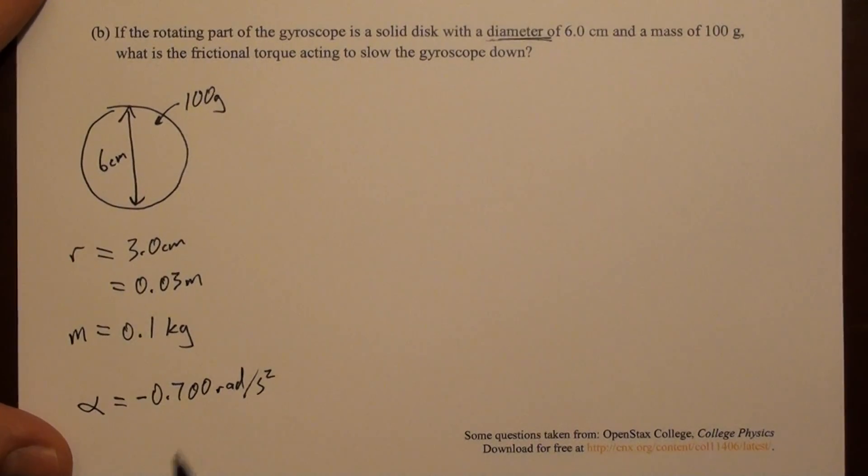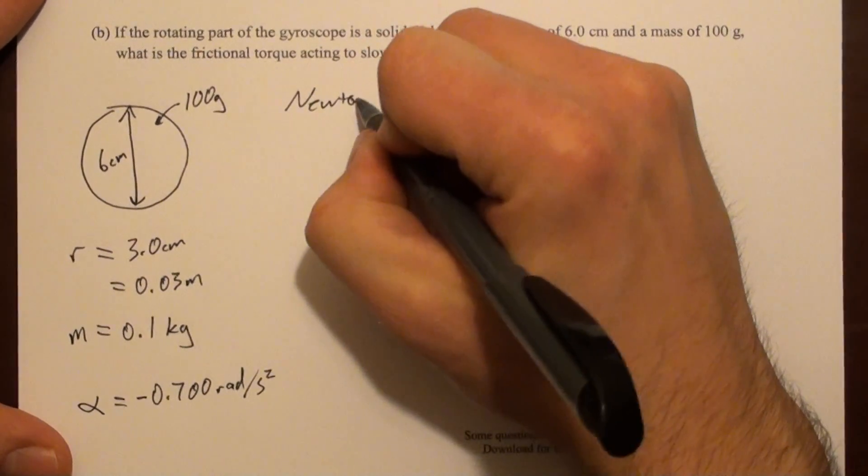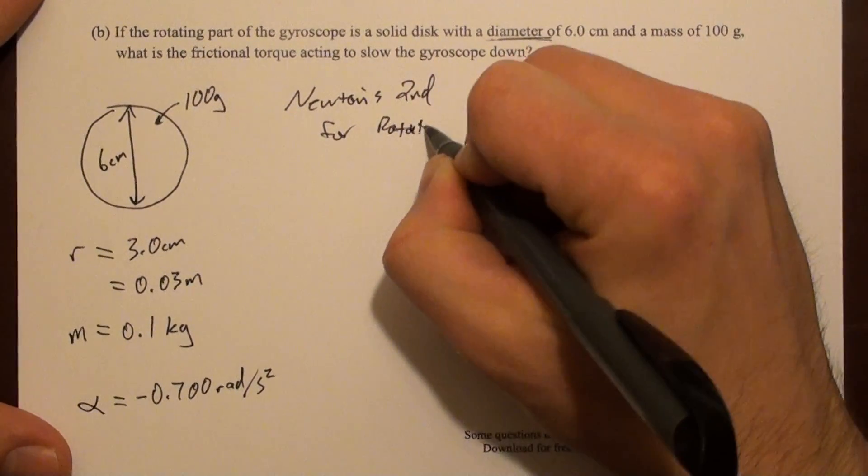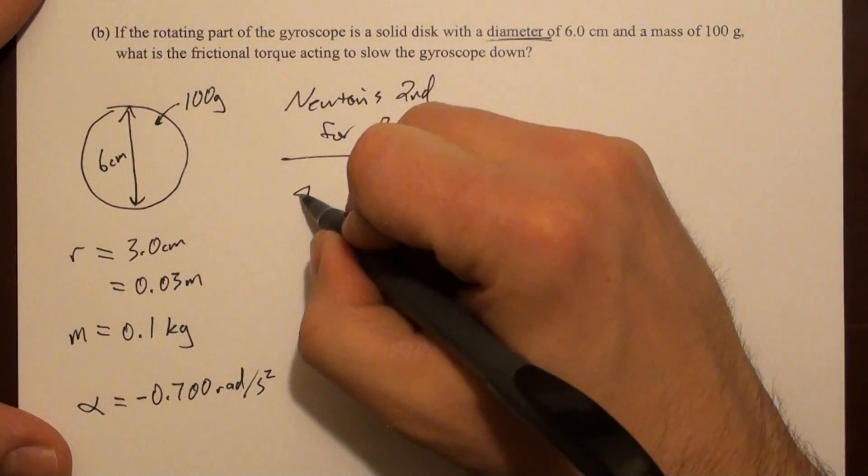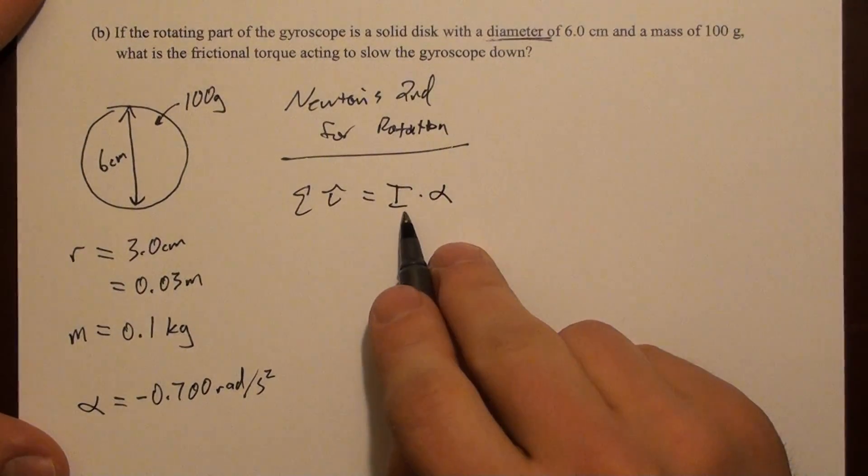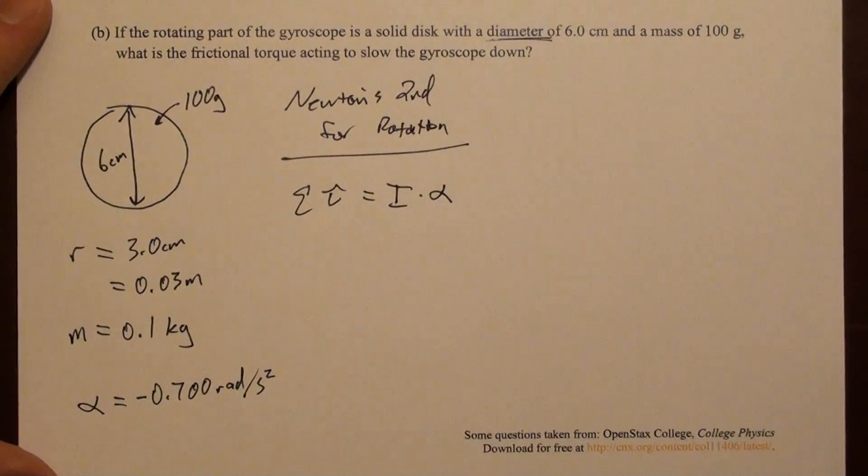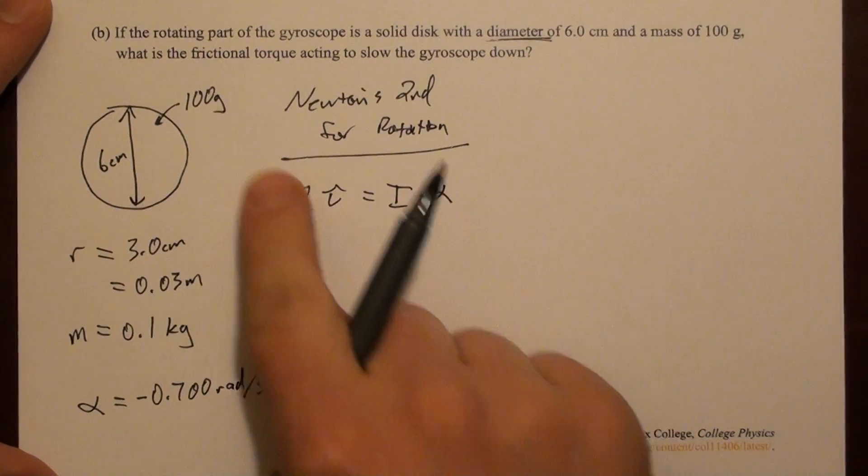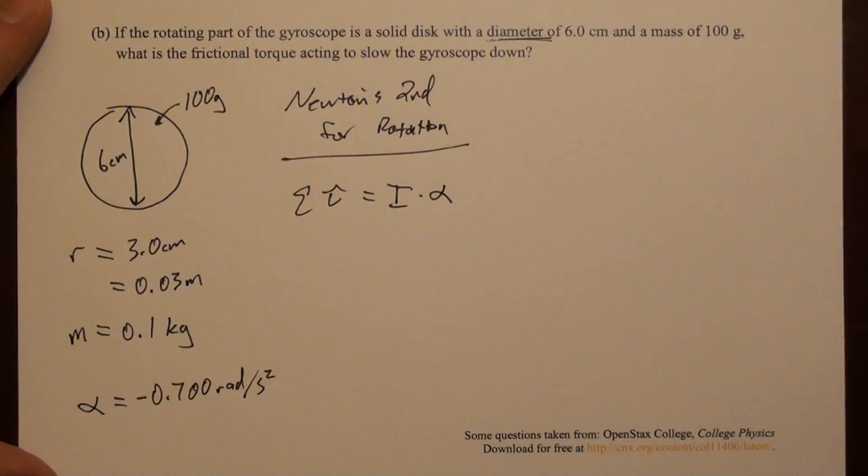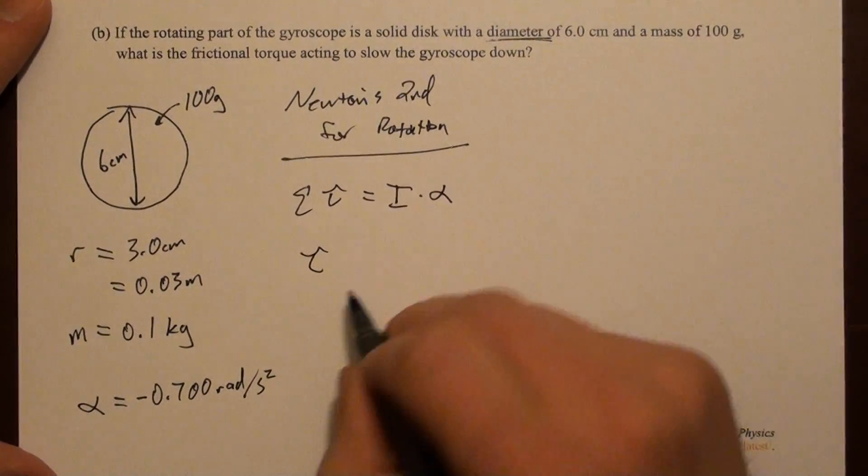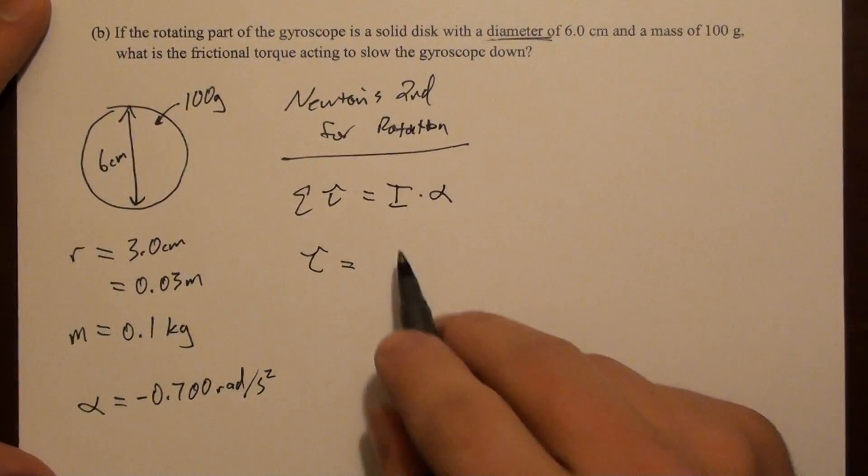Well, we're looking for torque. So we can relate that to angular acceleration alpha, which was given above as minus 0.7 radians per second squared. Alright, so we can relate torque and alpha using Newton's second law for rotation, right? Newton's second for rotation. Which just says that the sum of the torques equals I times alpha, where I is this moment of inertia.